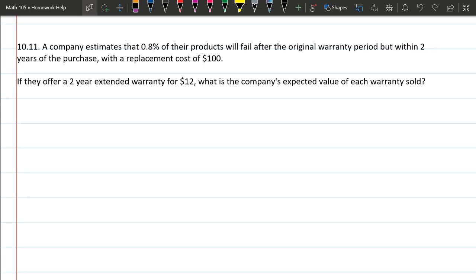So that means the 0.8 percent—0.8 percent is 0.008, and this is the chance it fails. And we're going to multiply that by the cost of failing, and the cost of failing is $100.